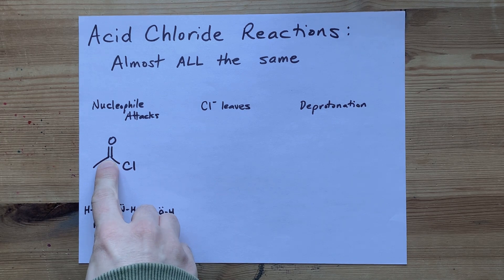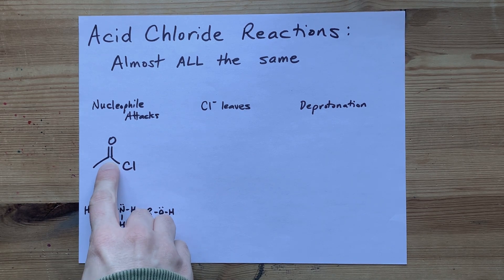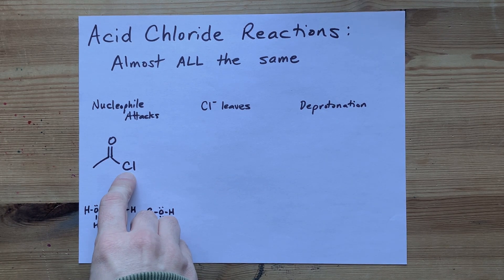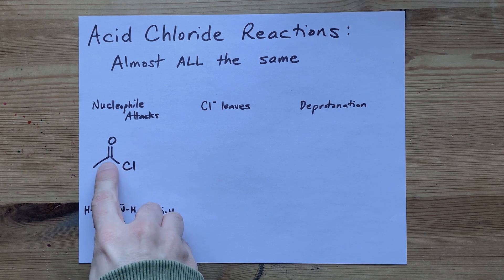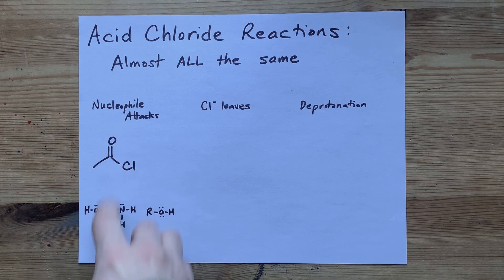Your acid chloride has a carbon that is double bonded to oxygen and single bonded to chlorine. Those are electronegative atoms, and so that carbon has a slight positive charge.